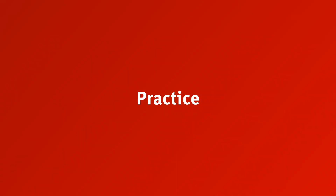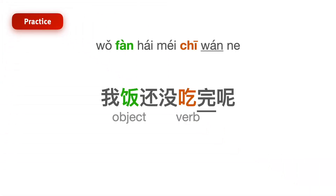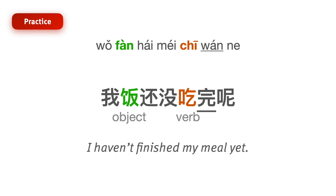Now let's do some practice and see if you can understand the following sentences. What does this sentence mean: 我饭还没吃完呢？ 完 means to finish, by the way. It means I haven't finished eating yet — I haven't finished my meal yet.